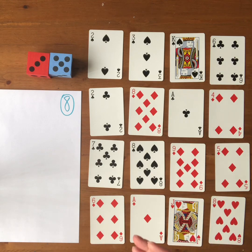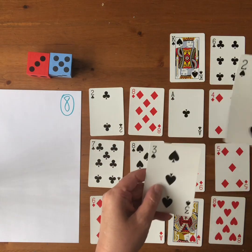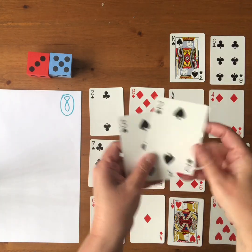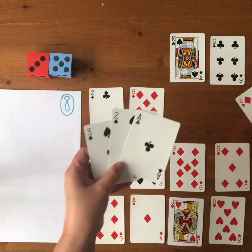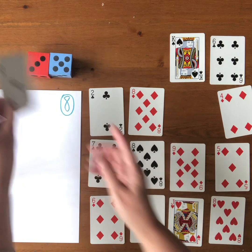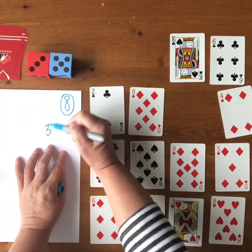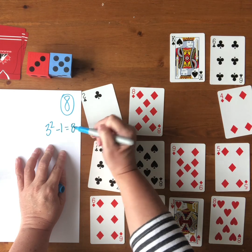One thing I'm noticing right away is I can use three and I can square it. So three squared is three times three, which equals nine. And then I can subtract one, and that gets me to eight. So I'm going to turn those cards over and write down that equation. So three squared subtract one equals eight.